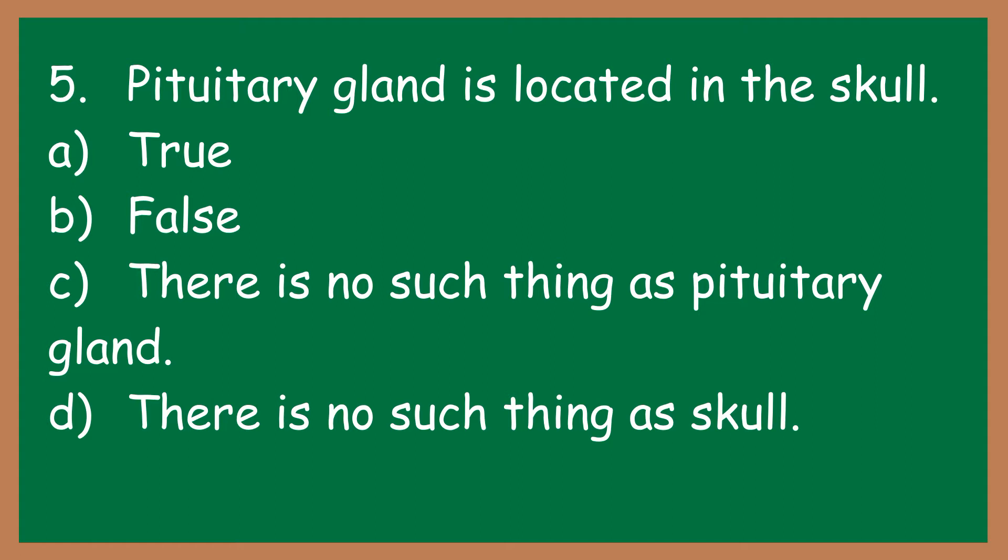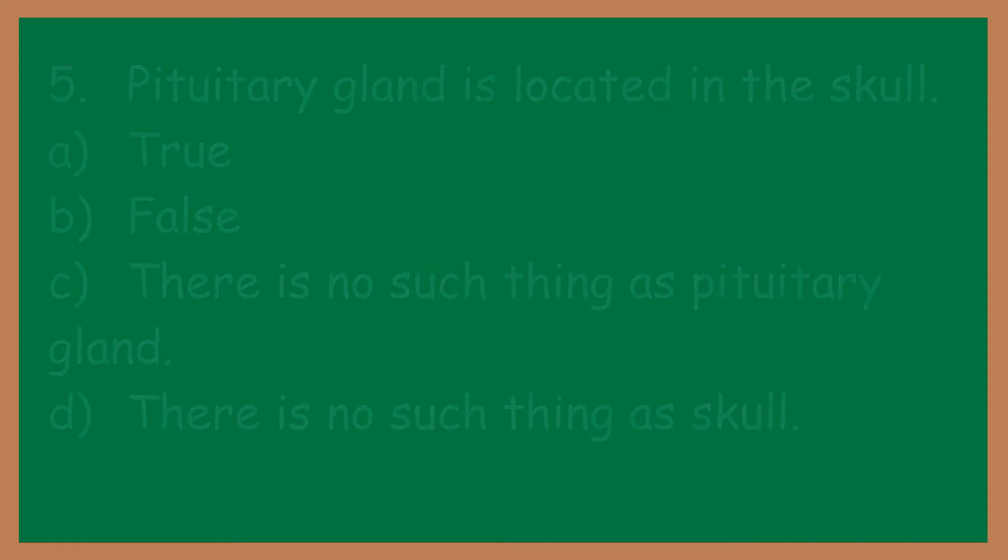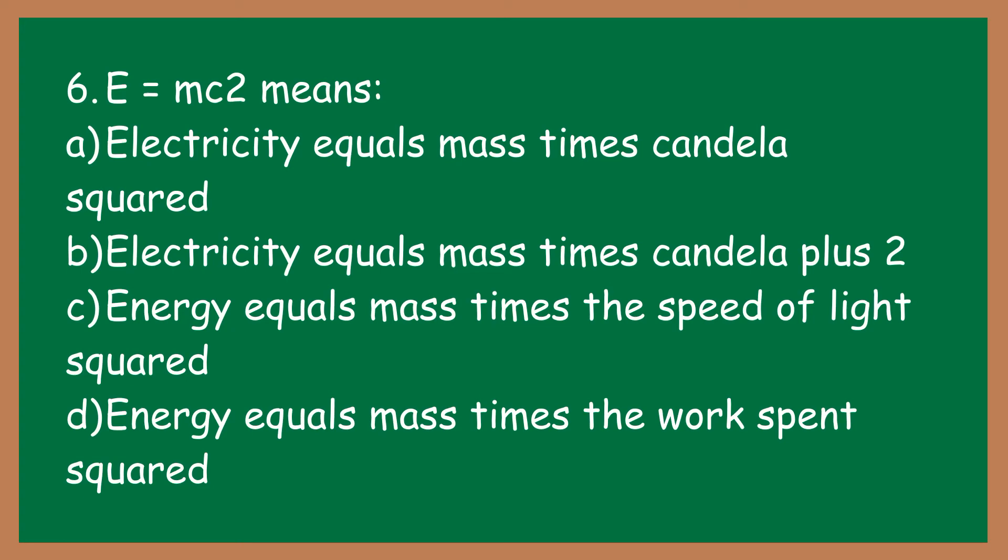Number six: E = mc² means: A) Electricity equals mass times candela squared, B) Electricity equals mass times candela plus 2, C) Energy equals mass times the speed of light squared, D) Energy equals mass times the work spent squared.